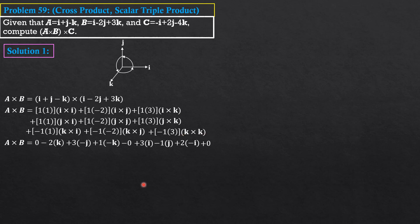Simplifying: I-components: 3I − 2I = I. J-components: −3J − 1J = −4J. K-components: −2K − K = −3K. Therefore, A cross B = I − 4J − 3K.